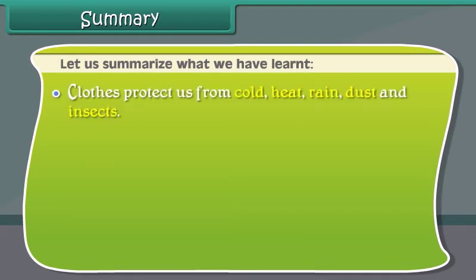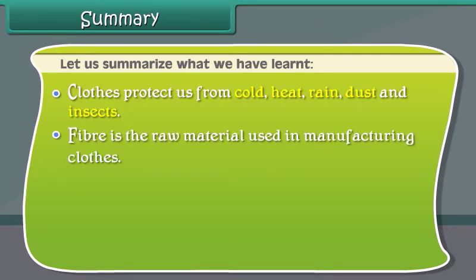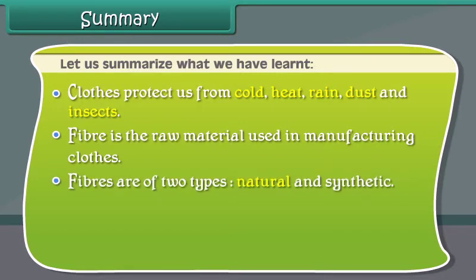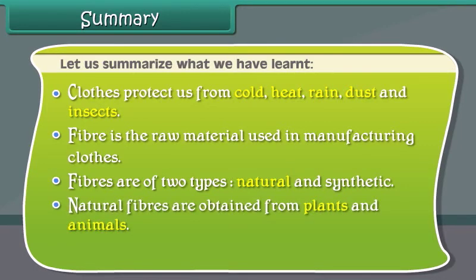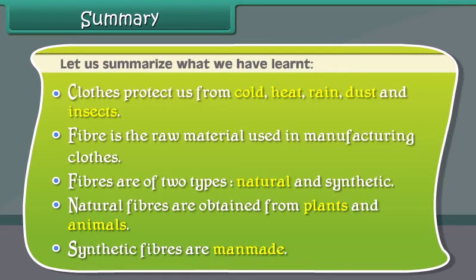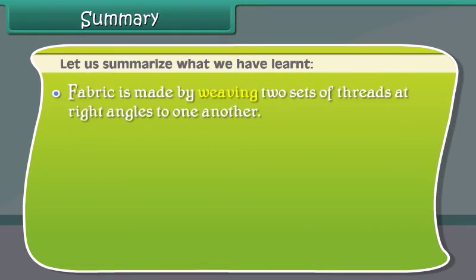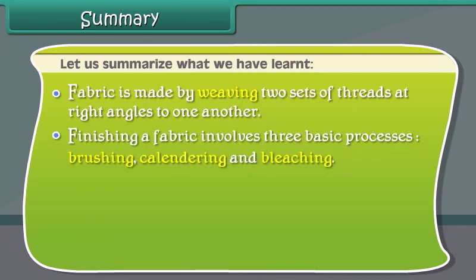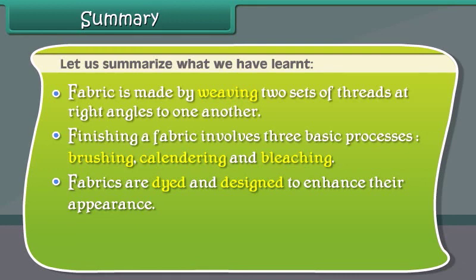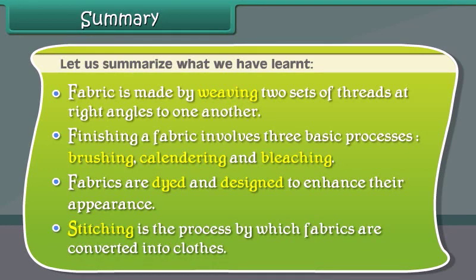Let us summarize what we have learned. Clothes protect us from cold, heat, rain, dust and insects. Fiber is the raw material used in manufacturing clothes. Fibers are of two types: natural and synthetic. Natural fibers are obtained from plants and animals. Synthetic fibers are man-made. Fabric is made by weaving two sets of threads at right angles to one another. Finishing a fabric involves three basic processes: brushing, calendaring and bleaching. Fabrics are dyed and designed to enhance their appearance. Stitching is the process by which fabrics are converted into clothes.